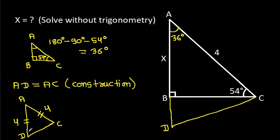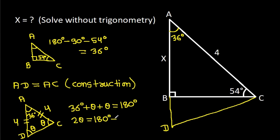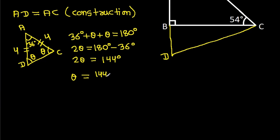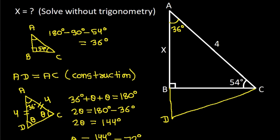These two base angles in triangle ADC will be equal — suppose theta — and the angle at D is 36 degrees. So 36 degrees plus theta plus theta equals 180 degrees, giving 2 theta equals 144 degrees, and theta equals 72 degrees. So this angle will be 72 degrees.